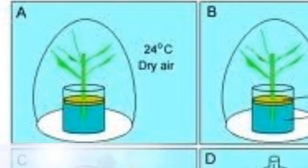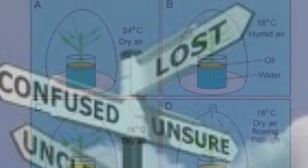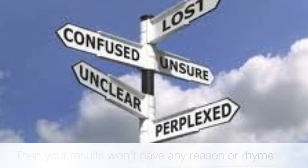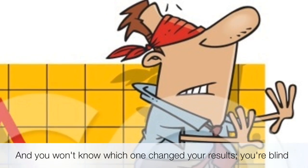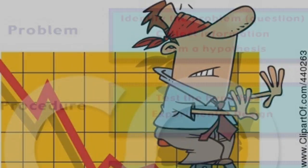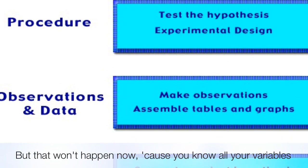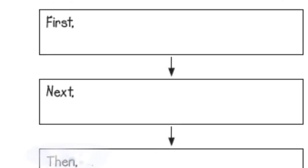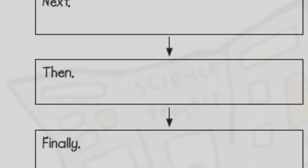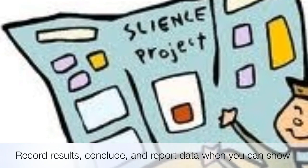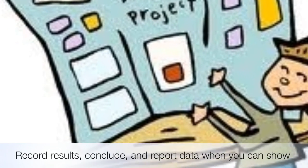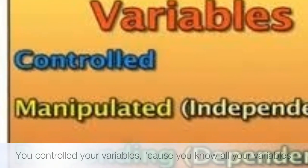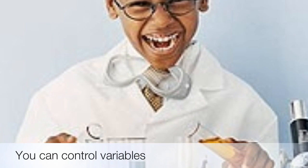If you change more than one at a time, then your results won't have any reason around. And you won't know which one changed your results — you're blind. But that won't happen now, cause you know all your variables. If you repeated your test again and your procedure was accurately written, record results, conclude and report data. You can show you can control your variables, cause you know all your variables.